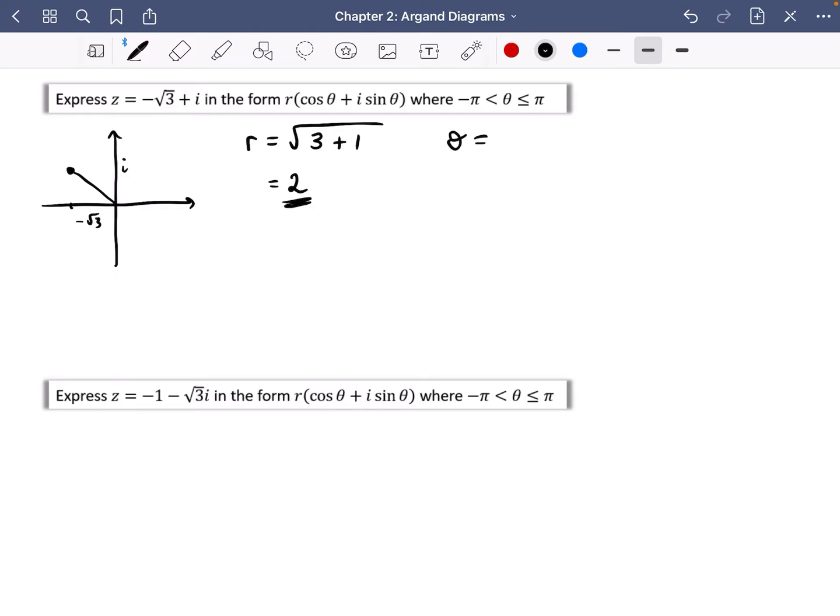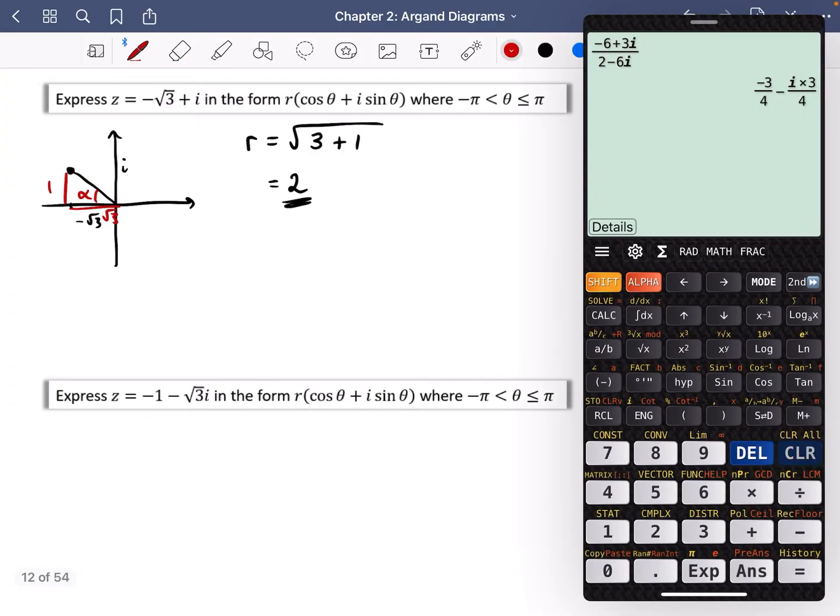And theta, let me be more careful about this one. Let's actually call this angle over here alpha. We know that this bit is one, this bit over here is root three. Now you should be able to tell me what that is off the top of your head. We know that tan of alpha is one over root three. I wonder if you can tell me what alpha is. So you can do a shift tan of one over root three. Alpha is pi over six.